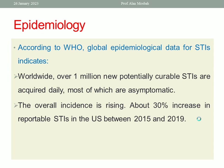When we talk about curable sexually transmitted infections by the WHO, we are talking about Chlamydia, Gonorrhea, Syphilis, and Trichomonas vaginalis. These are called the curable sexually transmitted infections — 1 million new potentially curable STIs per day, as mentioned by WHO.